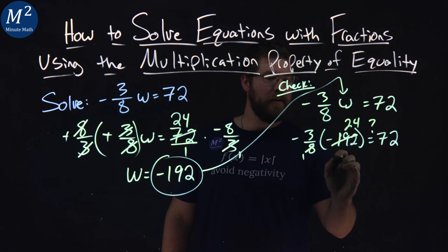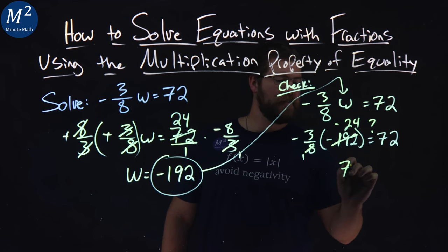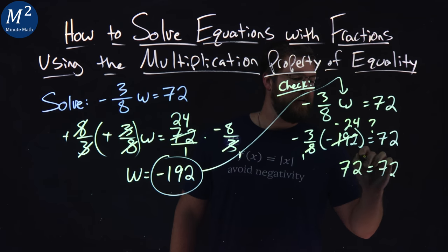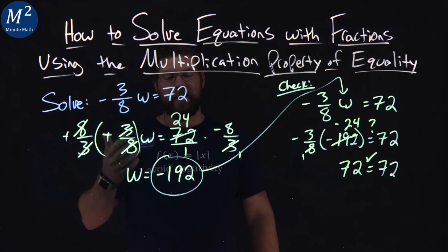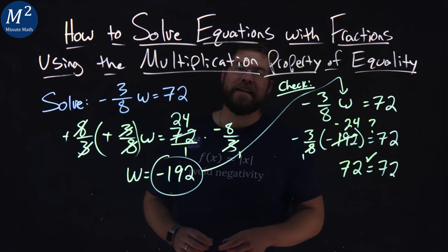And negative 3 times 24 is negative still. Negative 24 is a positive 72. And we can see left and right-hand side are equal, confirming that our solution to our equation is negative 192.